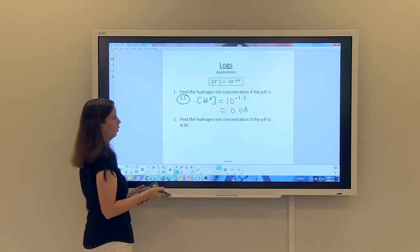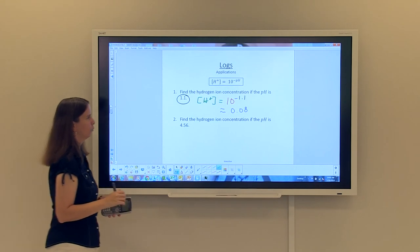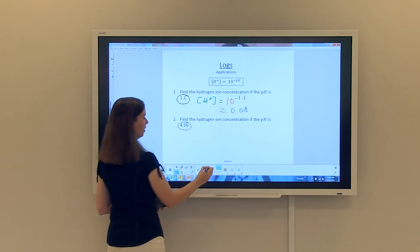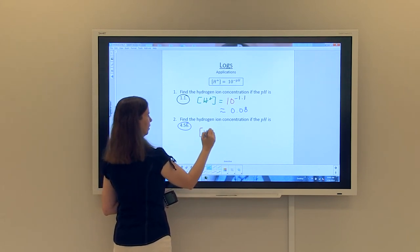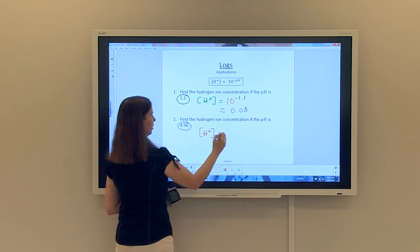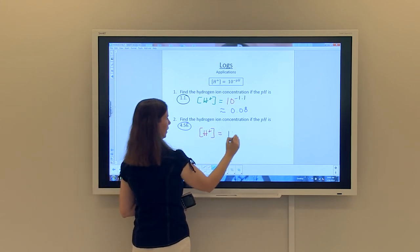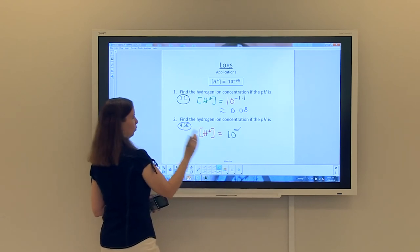For the second one, find the hydrogen ion concentration if the pH is 4.56. So this time given, this is our pH using exactly the same formula. So the hydrogen ion concentration is equal to, using our formula again, 10 to the negative pH. And our pH is 4.56.